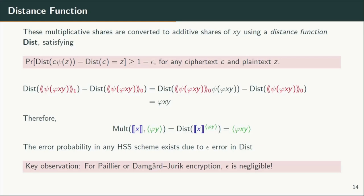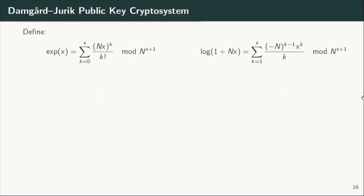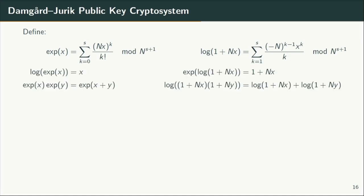Next, I'll present our proposed distance function, which has negligible error probability for Paillier and Damgård-Jurik ciphertexts. In our HSS construction, we use the Damgård-Jurik public key cryptosystem to encrypt the input values. This cryptosystem is based on a homomorphism exp from addition of plaintexts to multiplication of ciphertexts, and its inverse function log. These functions are analogous to e^(nx) and log base e^n, but exp is defined modulo n^(s+1) and log is defined modulo n^s. The power series in nx can have at most s nonzero terms modulo n^s, because the power-s term will be a multiple of n^s. Hence the Taylor series for log and exp become finite sums, and it can be proven that exp and log are inverse functions of each other and are homomorphisms — analogous to how properties of e^x and natural log over the reals can be proven using Taylor series.